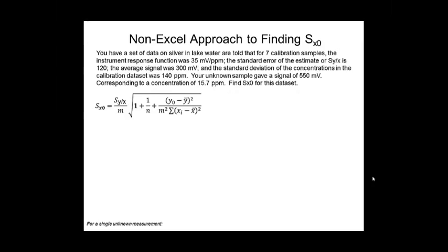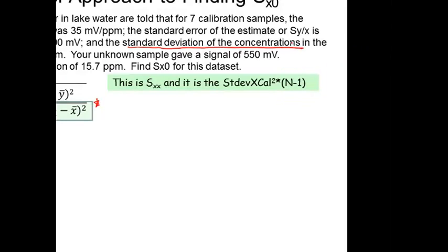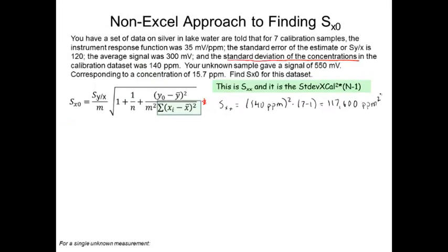Okay, so let's get started. First off, we know that s x zero is equal to this very large, complicated expression. But you'll see that I gave you s y sub x. And I also gave you, in this case, a standard deviation of the concentrations. So that's going to help you a lot. So this number here is going to be very much related to the standard deviation of the concentration. So this is s x x. And remember, we're going to square that standard deviation and multiply it by n minus one, where n, in this case, is the total number of measurements. So you can see that I calculated s x x pretty simply. I simply took the standard deviation number, 140 ppm, I squared that, and I multiply it by n minus one to get my s x x. So that's pretty straightforward.